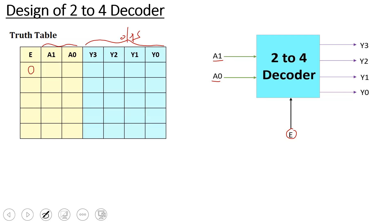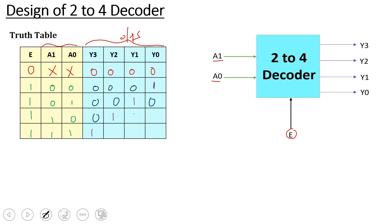First, when enable is 0: for all input combinations of A1, A0 — that is 0,0 then 0,1 then 1,0 then 1,1 — the output is all zeros. When enable is 1: the 4 input combinations are 0,0 then 0,1 then 1,0 then 1,1. When input is 0,0,0 — you activate y0.